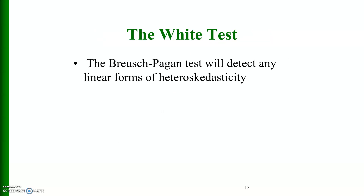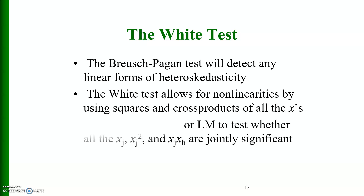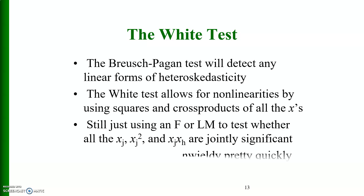Another test for detecting heteroscedasticity is the White test. The Breusch-Pagan test will detect any linear forms of heteroscedasticity. The White test allows for non-linearities by using squares and cross-products of all the x variables. We still use an F or LM test, testing whether all of the x variables, x_j squared, and x_j times x_h are jointly significant. This can get unwieldy pretty quickly.